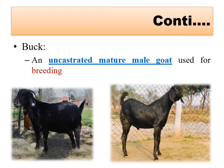A buck is an uncastrated mature male goat used for breeding purposes. Uncastrated means they are able to reproduce and are used for breeding. This type of mature male in the case of goat is called a buck.